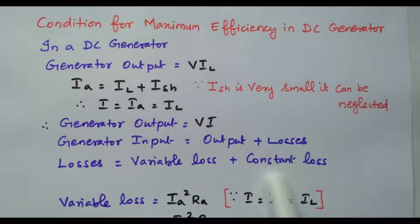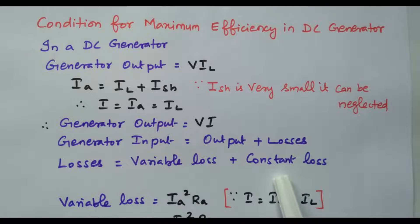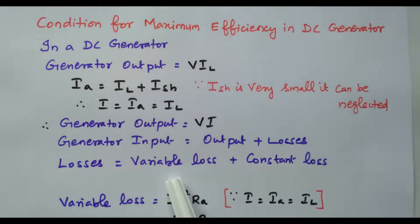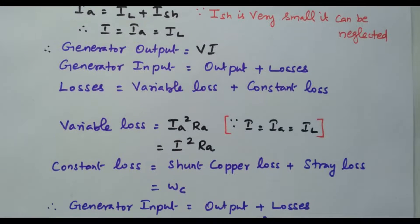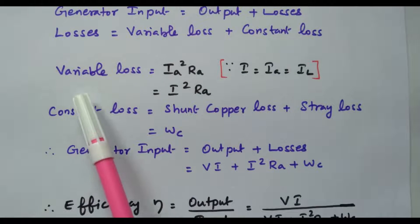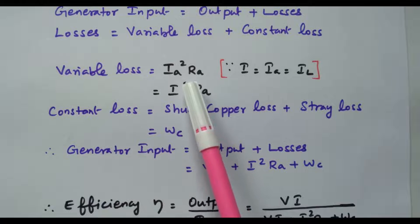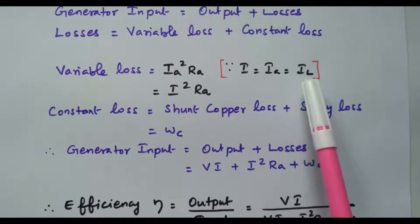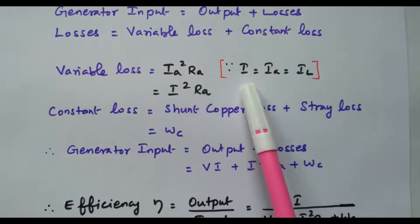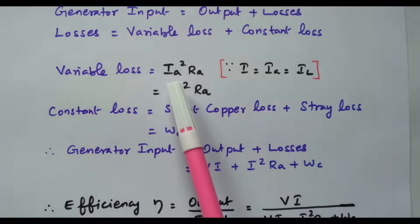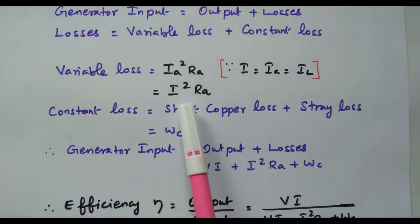There are two types of losses: variable loss and constant loss. Variable loss is due to copper — the armature copper loss. Friction and iron losses are constant losses; they do not change with current. Copper loss changes with current, so it is called variable loss. Variable loss equals IA² × RA. Since IA = IL = I, variable loss equals I²RA.